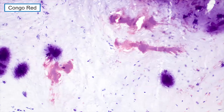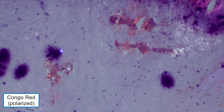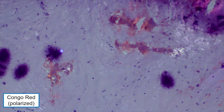Looking at the valve, all that deep purple is calcification with some fibrosis and myxomatous changes. Looking at some of the material in the valve, I worried about this case and threw a Congo red on it as well. Despite the calcification, there actually is some congophilia, and when you polarize it — sure enough — apple green birefringence. I sent for typing on both. The left atrial appendage came back as atrial natriuretic factor (ANF) type amyloid, and the mitral valve came back as an indeterminate type of amyloidosis.